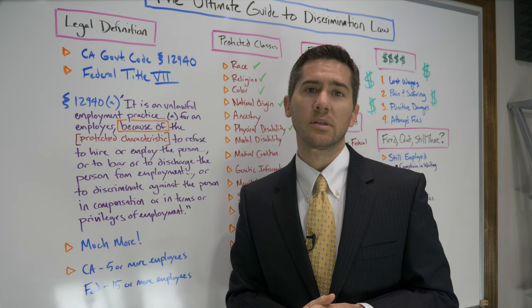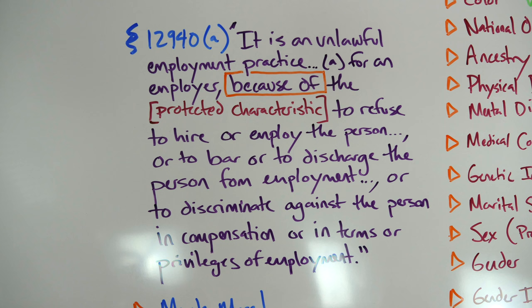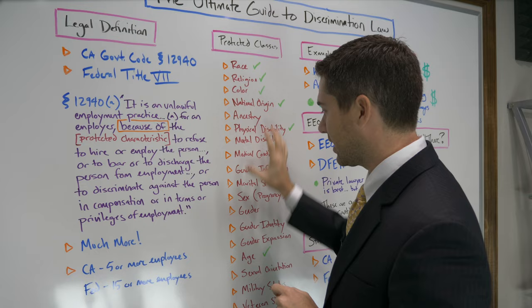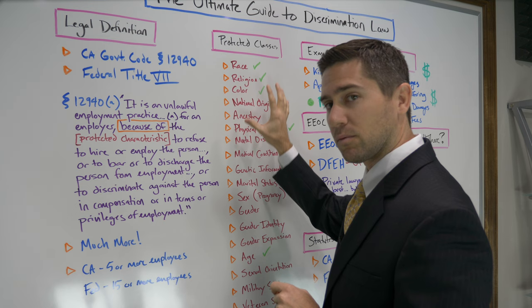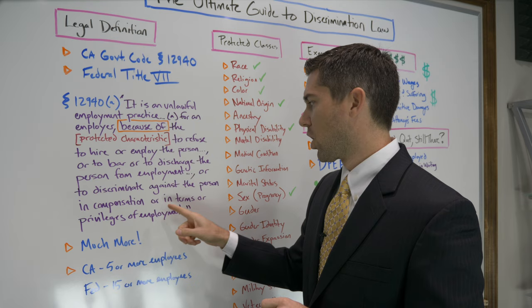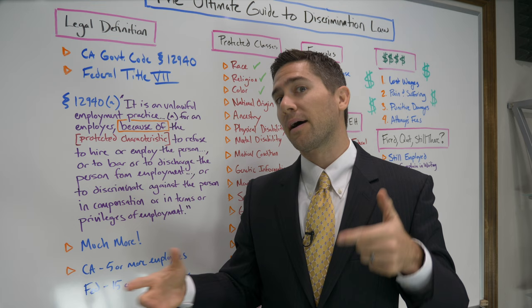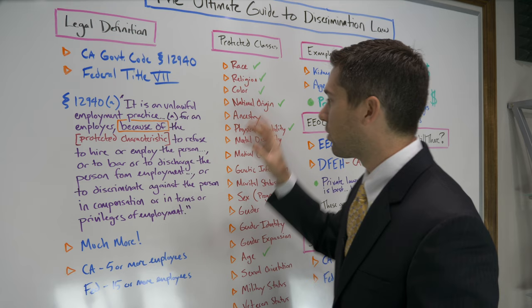I'm actually going to read the law to you. Section 12940, subsection A says: it is an unlawful employment practice for an employer — because of, that's an important part — the protected characteristic, to refuse to hire or employ the person, or to bar or to discharge the person from employment, or to discriminate against the person in compensation or in terms or privileges of employment. To summarize: it is illegal for a company to fire, demote, cut the pay, or refuse to hire anyone because that person has one of these protected characteristics.